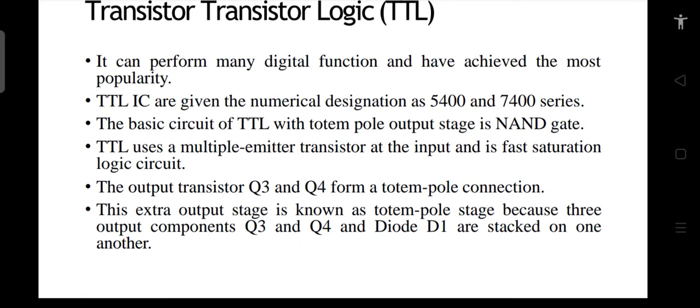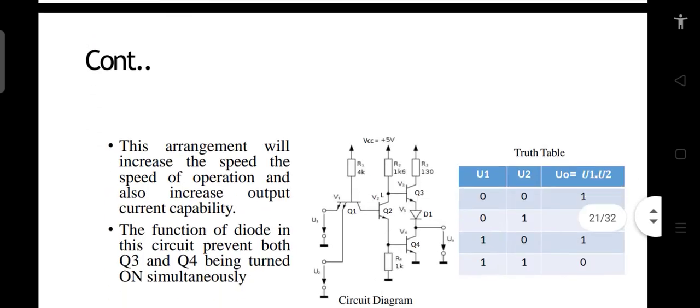The basic gate for the TTL is the NAND gate. The TTL circuit operates in multiple modes: one mode is called the totem pole mode, the other is called the open collector configuration, and the third mode is called the tri-state or high impedance mode. These are the three modes in which your TTL can work.